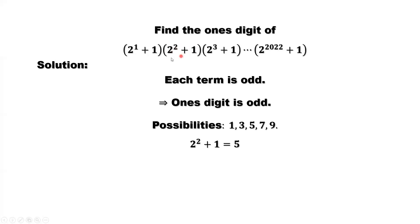5 times the remaining product. 5 times anything means the one's digit should be 5 or 0.